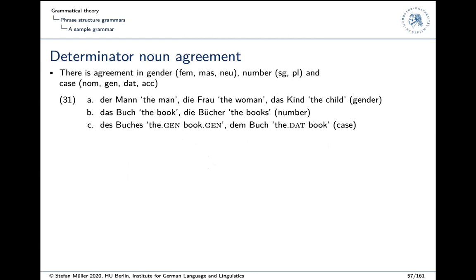And so we have three by two by four, 24 new categories for NPs in total. And depending on the valence patterns we assume we have three by two by X categories for verbs. So, hmm, there's something wrong and it's getting worse. So for determiner-noun agreement, we have agreement in gender and number and in case. So this, the 31 shows some examples. 'Der Mann', 'die Frau', 'das Kind'. So we have different determiners according to gender. 'Das Buch', 'die Bücher'. We have different forms according to number. 'Des Buches', 'dem Buch', different forms, different determiners, different inflection according to case.